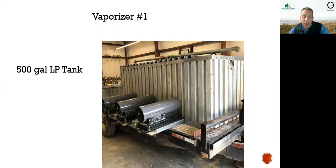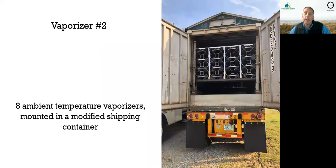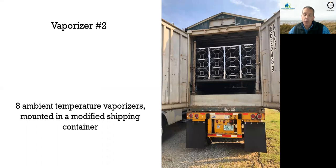This is a picture of the 500-gallon LP tank vaporizer with external heaters. The external heaters help sublimate the dry ice — the liquid CO2 goes into the 500-gallon LP tank and the heaters help sublimate the dry ice to create the gas. This is vaporizer number two. You can see four ambient temperature vaporizers here — they're nothing more than tubes with fins to allow heat exchange with the ambient temperature. There are four on this rack and another set of four in front, for a total of eight ambient temperature vaporizers in this container.